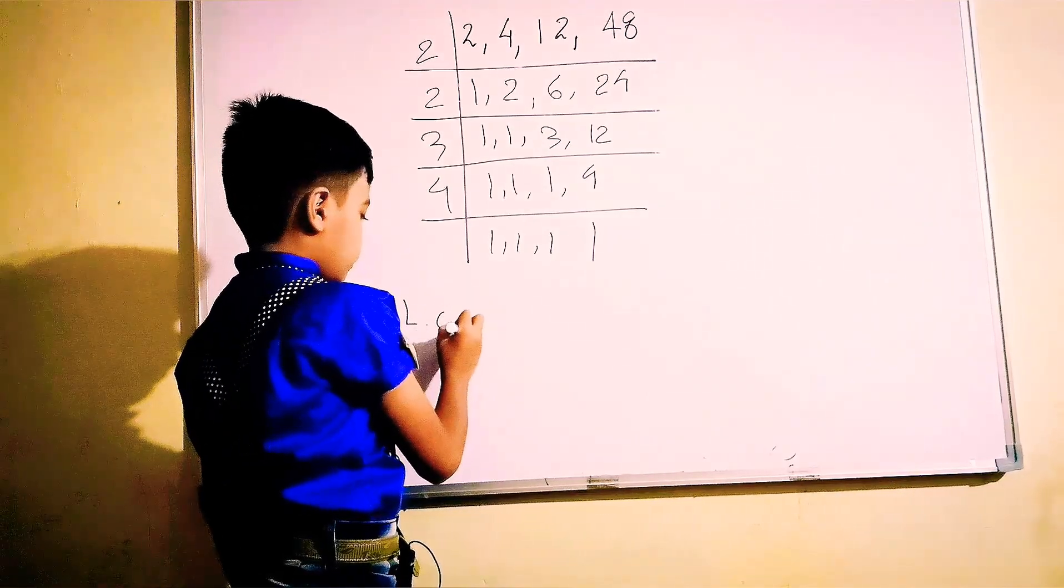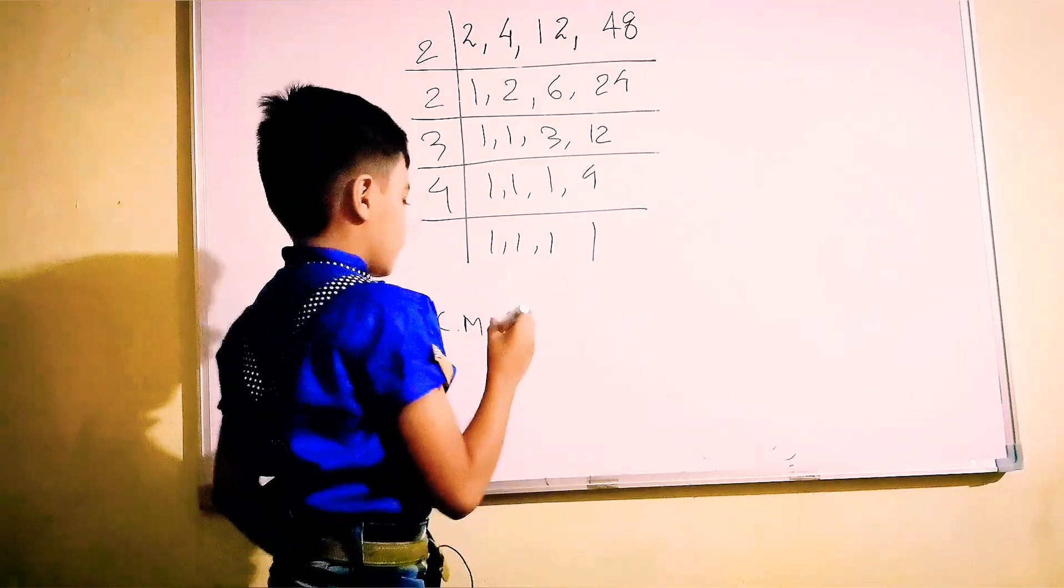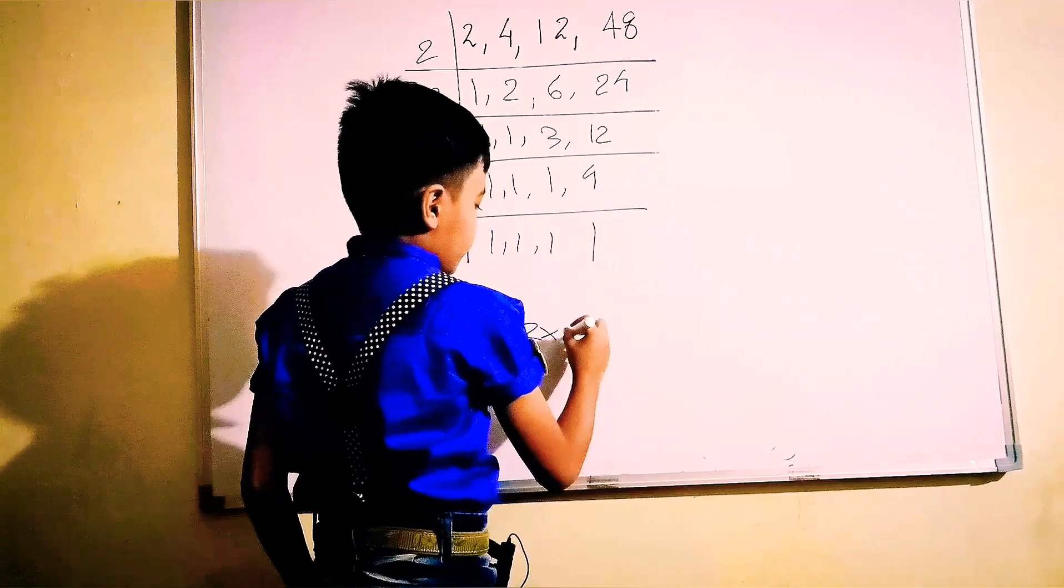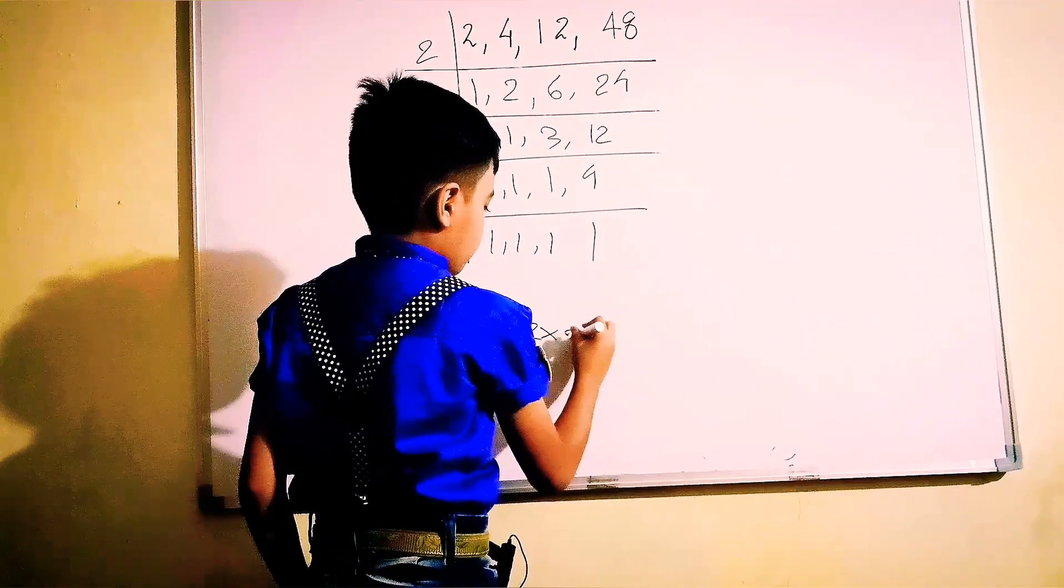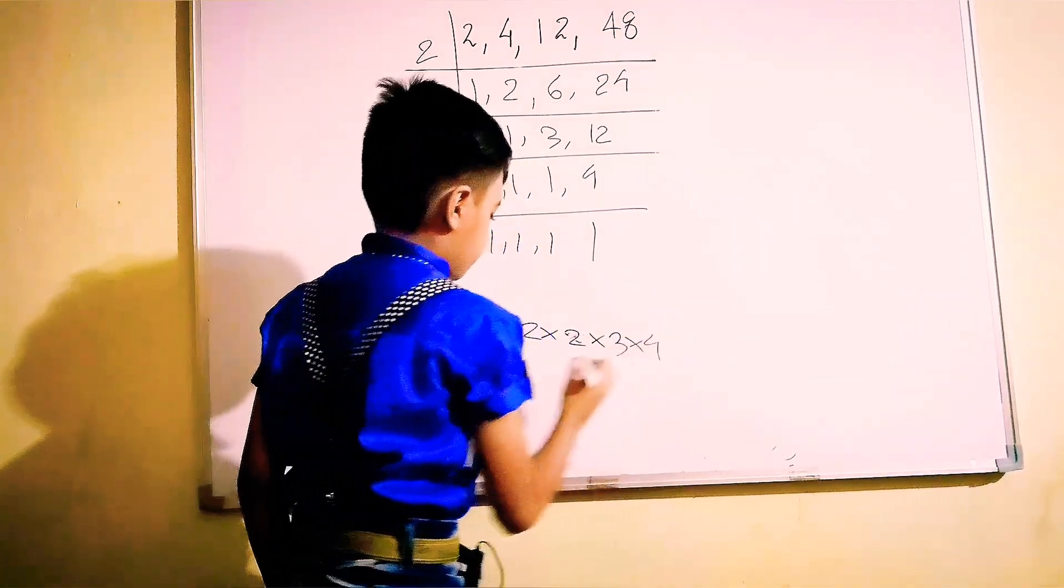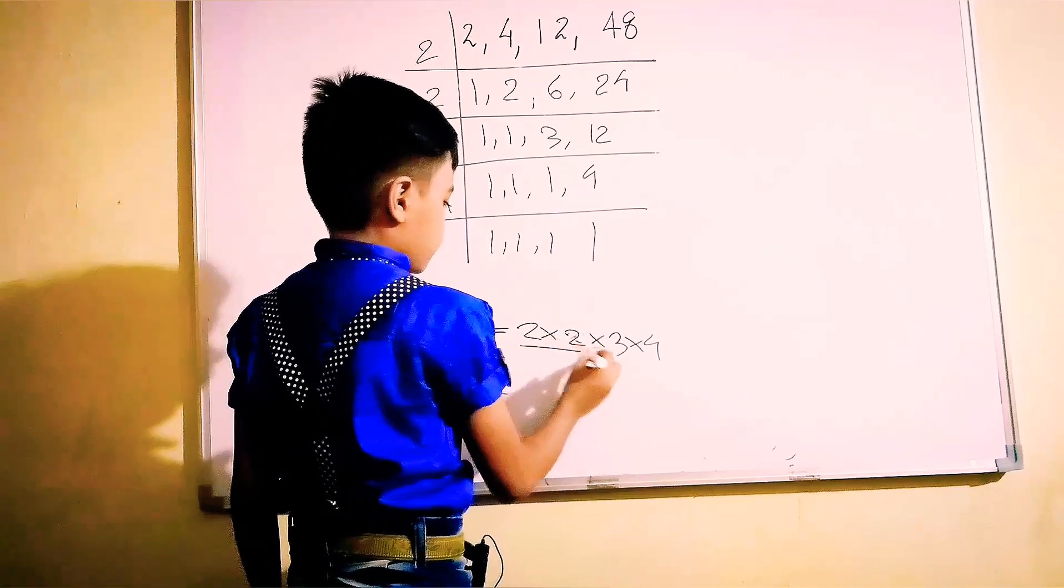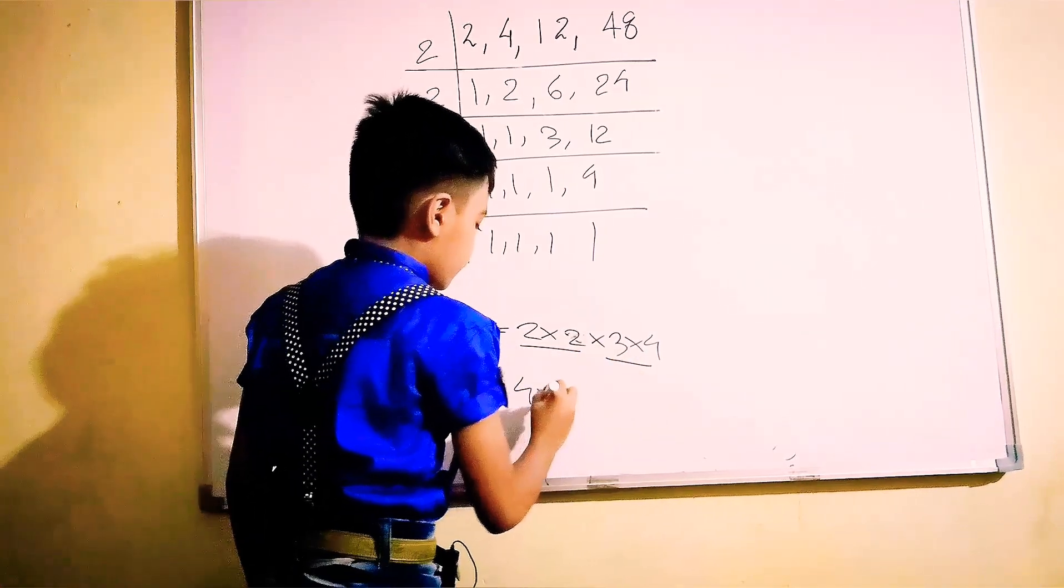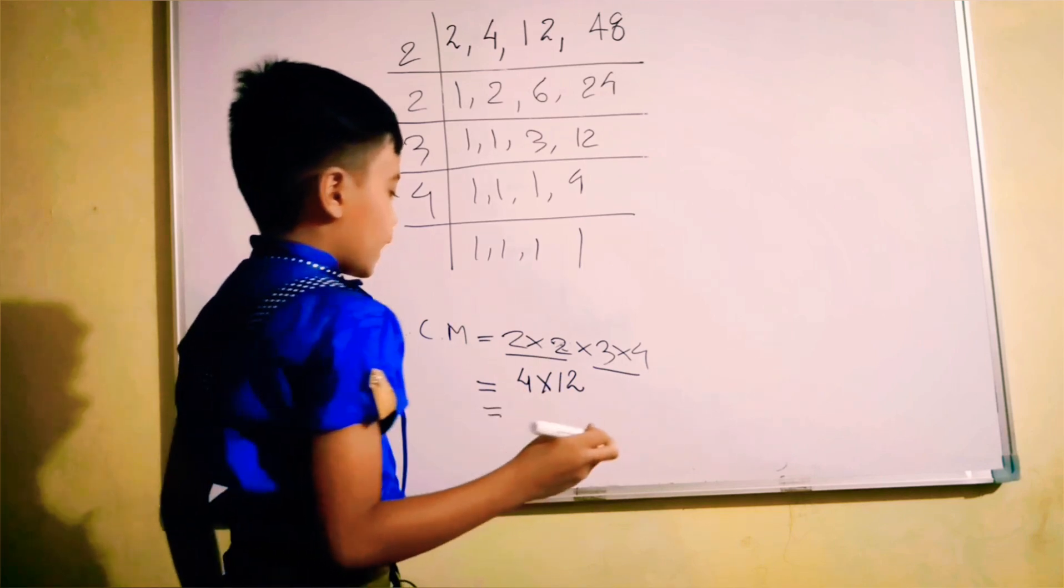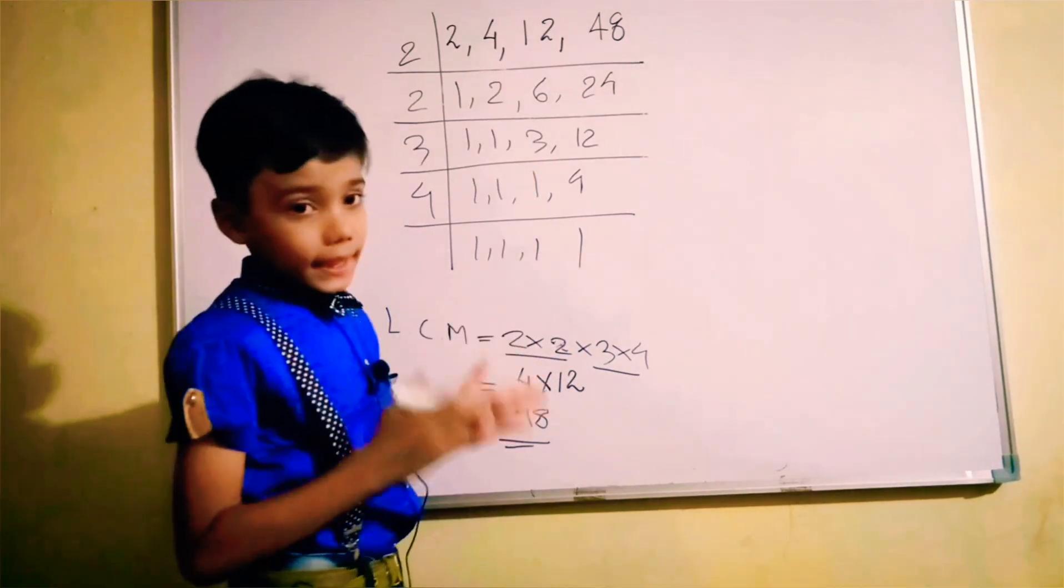Our LCM is product of all of these numbers. Let's multiply all of these numbers. 2 into 2 into 2 into 3 into 4. Now we have to make its pairs. 2 twos are 4 and 3 fours are 12. 12 fours are 48. So LCM of all of these numbers is 48.